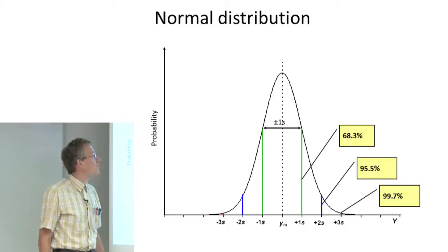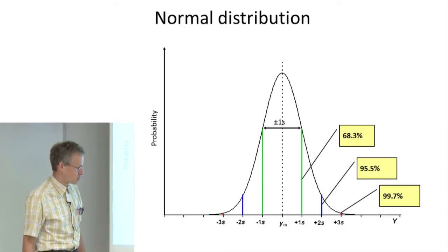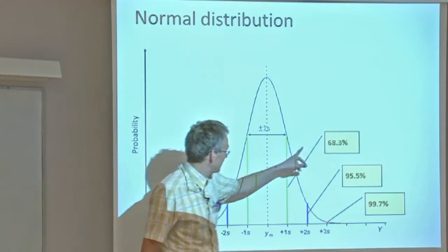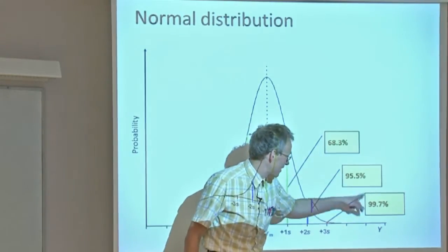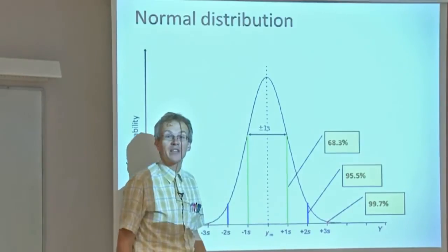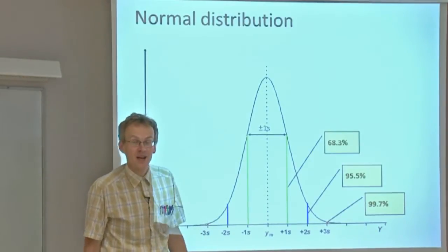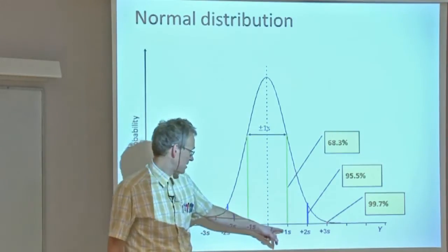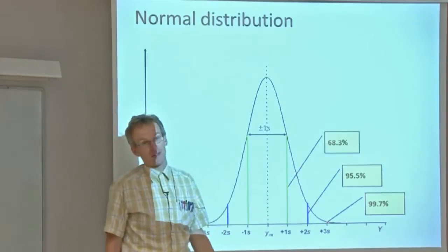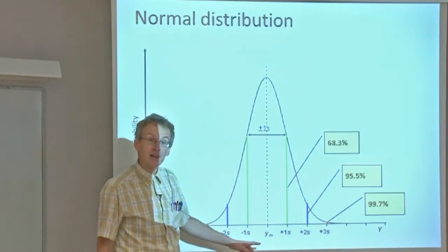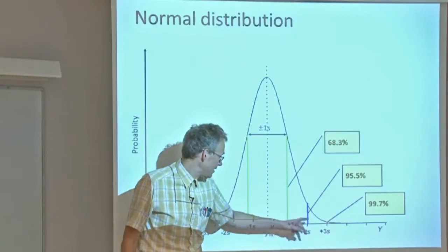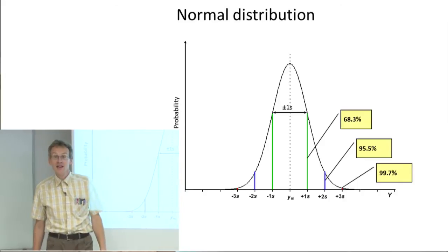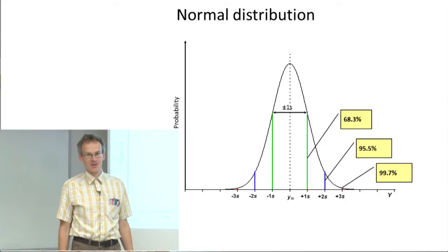Let us go back for a moment to the normal distribution. We have examined that quite carefully and discovered that these probabilities are quite important because they set for us the coverage probabilities of the different uncertainties. For example, the standard uncertainty has a coverage probability of roughly 68%, and the K=2 expanded uncertainty has a coverage probability of roughly 95%, if the result is distributed according to the normal distribution.